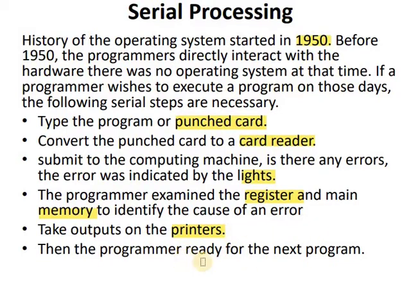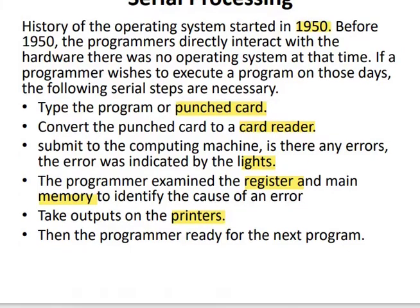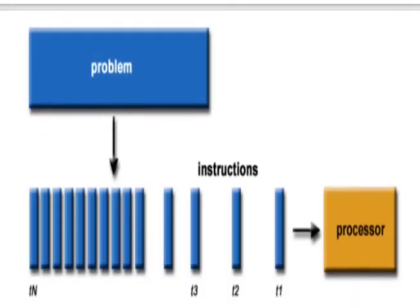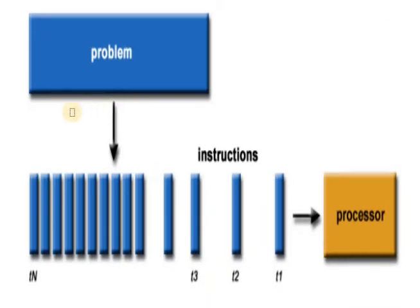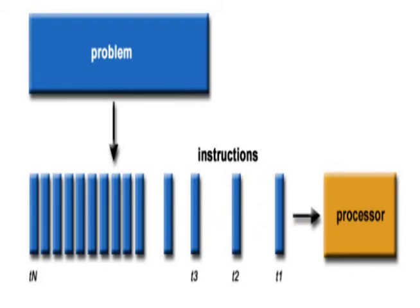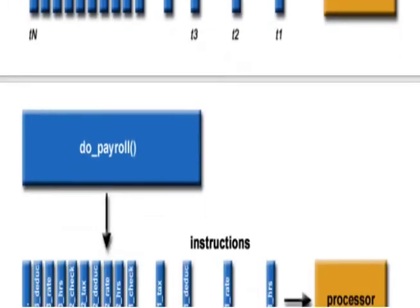The computer is then ready for the next job. A big problem is divided into different tasks: T1, T2, T3, and up to TN. As the name implies, the process goes one task at a time — T1 executes first, then T2, then T3, then T4, and so on.